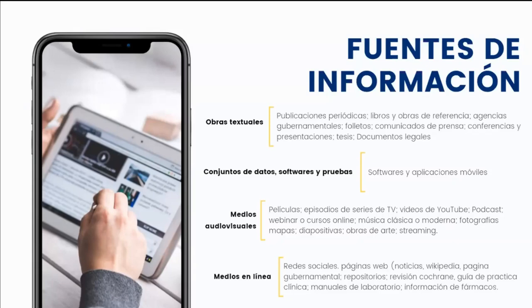En cuanto a Wikipedia, hay una discrepancia entre si es o no válida como fuente, y si se vale usar redes sociales como fuentes de información. Yo siempre lo dejo a criterio de cada persona, considerando que si quiero consultar un concepto en Wikipedia, puedo consultar ese mismo concepto en un diccionario que también puedo encontrar en línea. Recuerden que Wikipedia permite que cualquier persona suba información y a veces la vinculan con datos en modo de burla, lo que afecta la información. Por eso tenemos que tener criterio sobre quién lo publica y cómo llegar a ello.